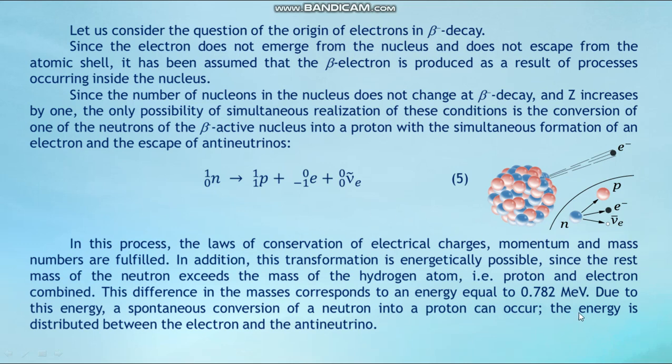In this process the laws of conservation of electrical charge, momentum, and mass number are fulfilled. This transformation is also energetically possible since the rest mass of the neutron exceeds the mass of the hydrogen atom (proton and electron combined). The difference in masses corresponds to an energy equal to 0.782 MeV, due to which a spontaneous conversion of a neutron into a proton can occur, with the energy distributed between the electron and the anti-neutrino.